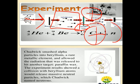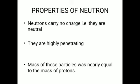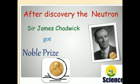This experiment concluded that there is a particle present in the nucleus having mass equal to the proton, but this particle is called a neutron because it has no charge—it is electrically neutral. The properties of neutrons were discussed: they carry no charge, they are highly penetrating due to their high energy and speed, and their mass is nearly equal to that of protons. After this discovery, Sir James Chadwick was awarded a Nobel Prize.